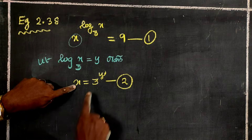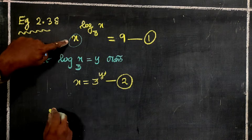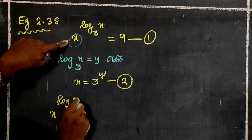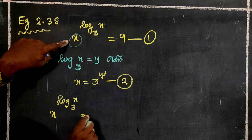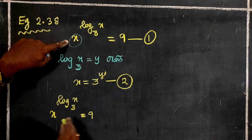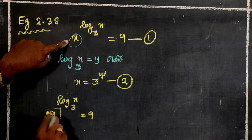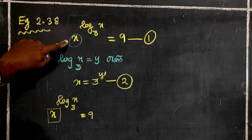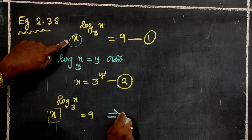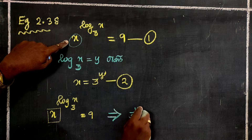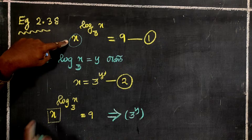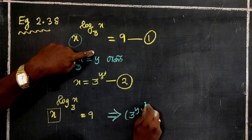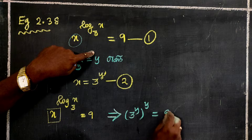x is equal to 3 power y. Now, x power log of x base 3 is equal to 9. Substituting, 3 power y is raised to the power y, giving 3 power y into y is equal to 9.